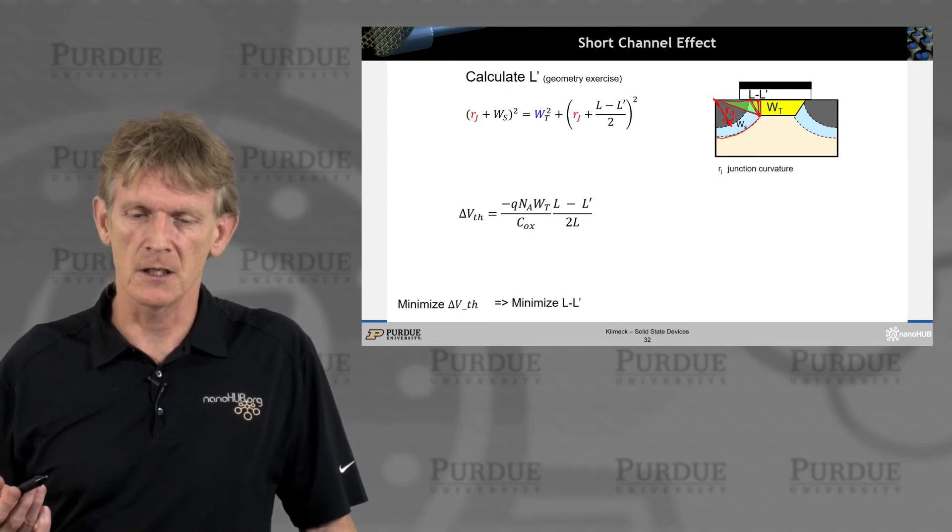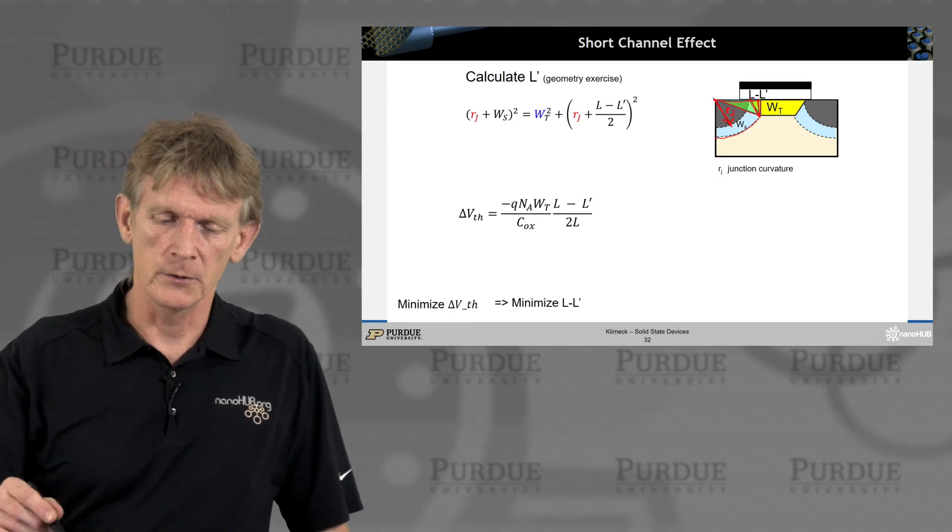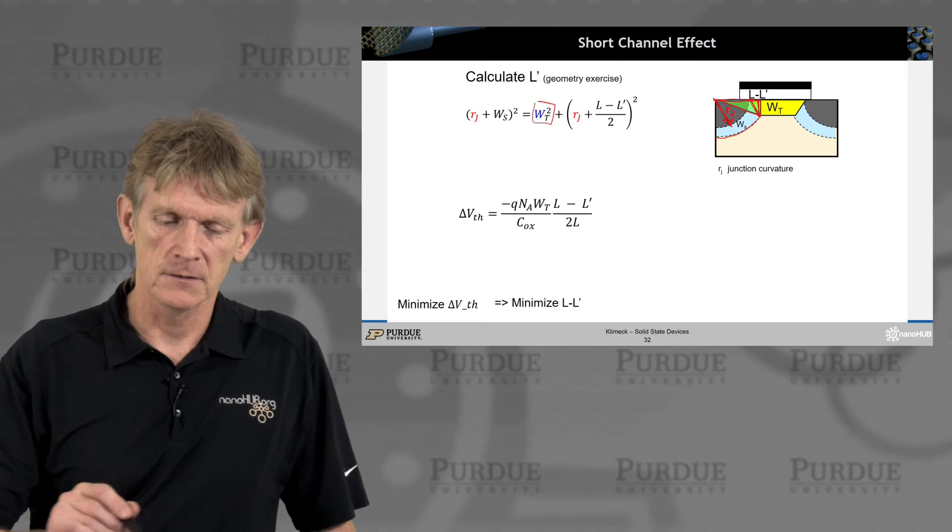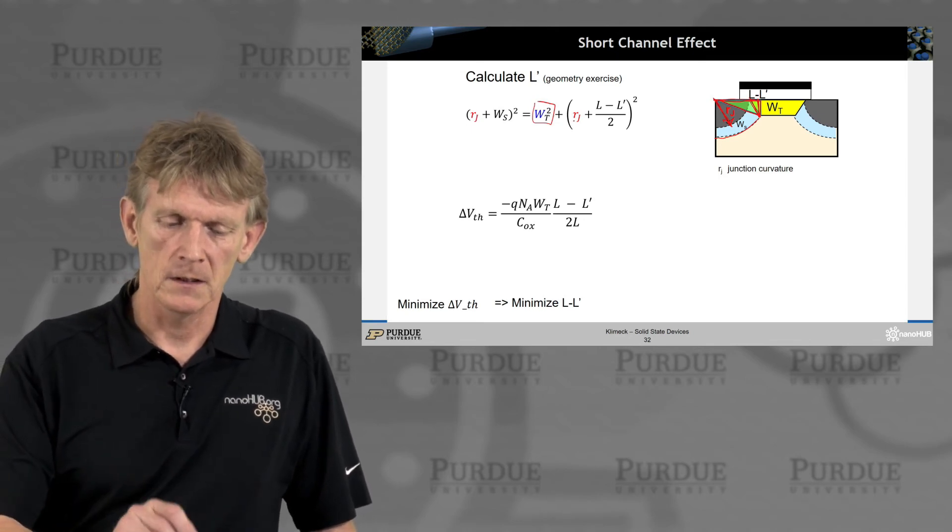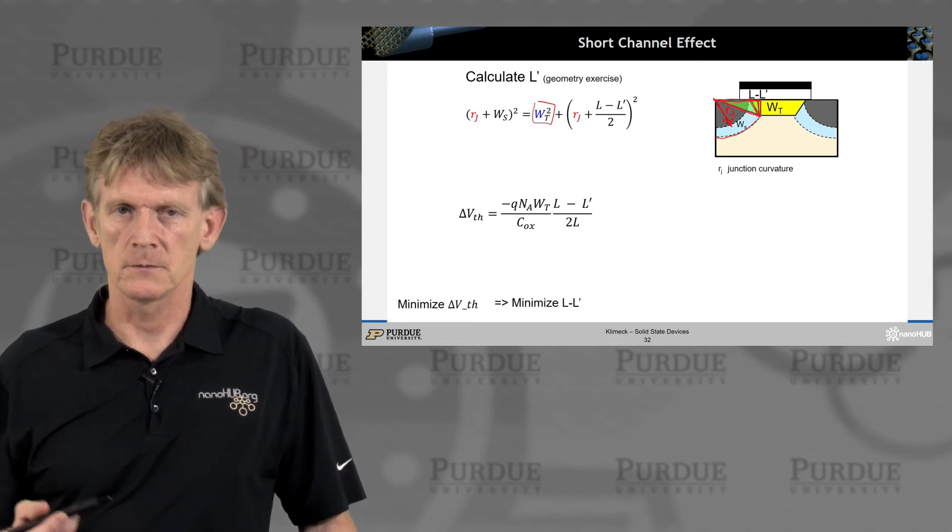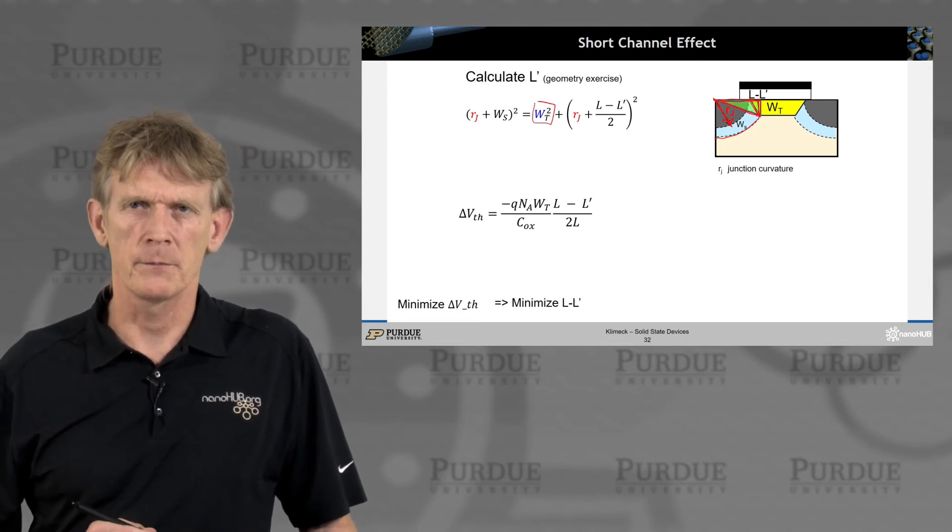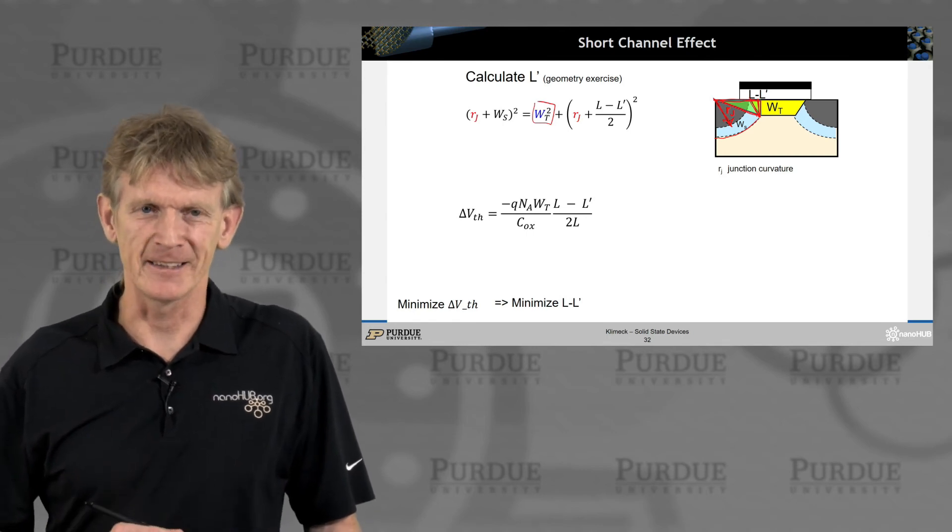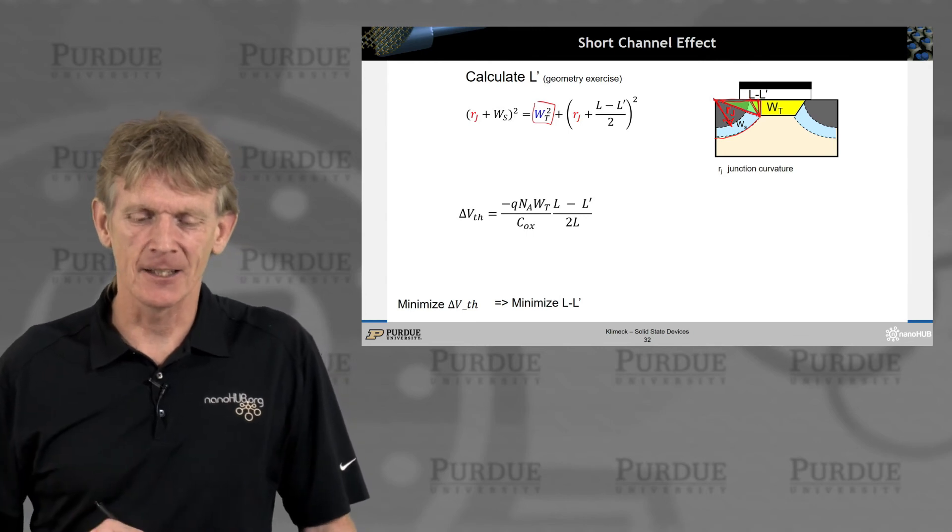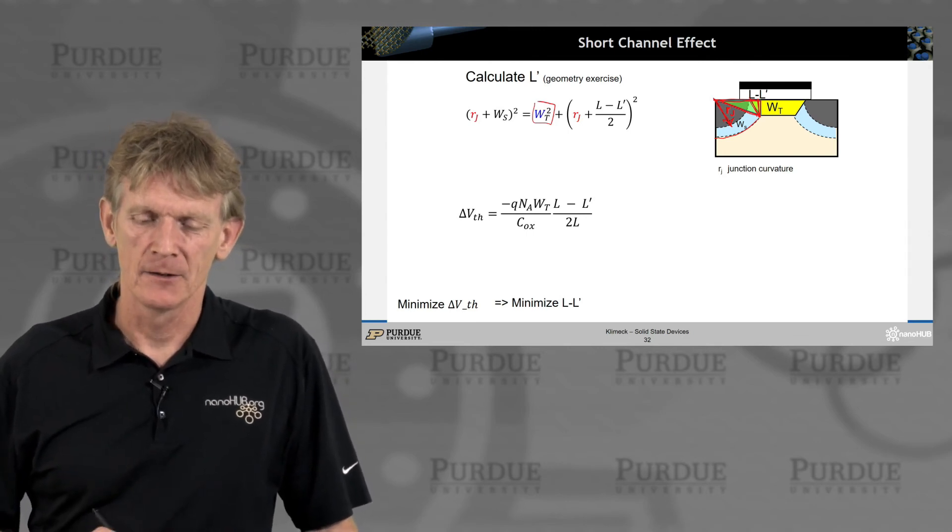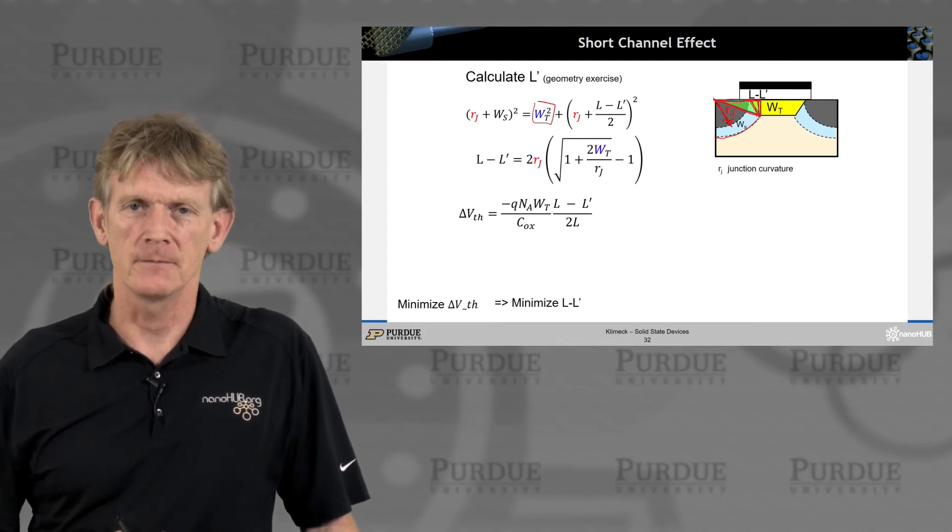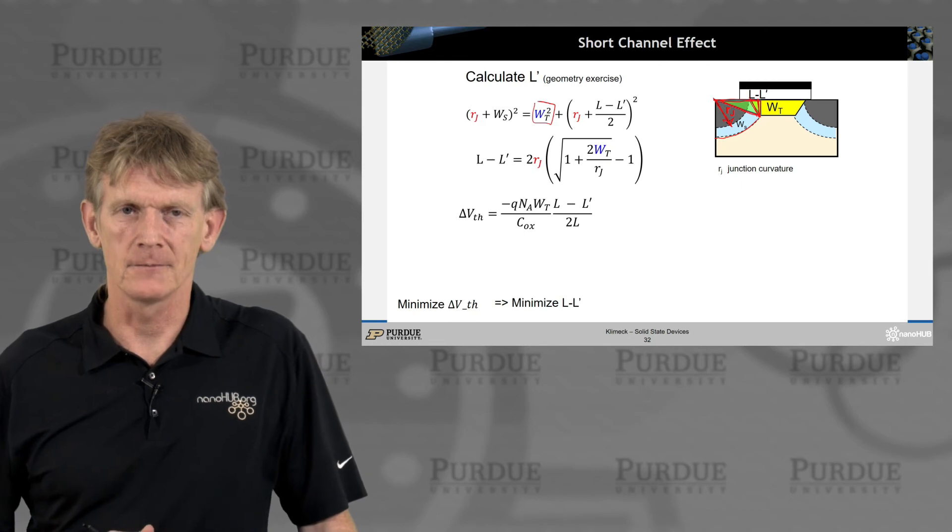If we wanted to do simple geometry, we know what Wt squared is plus this guy squared, including Rj. That needs to be the hypotenuse. That's this Pythagoras. You just write down this expression for this triangle, and you can solve it for L minus L prime. That's trivial geometry.